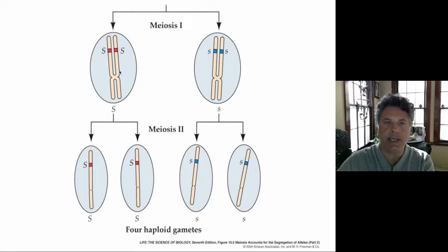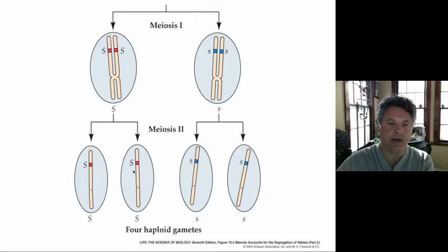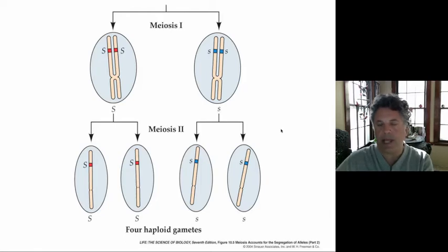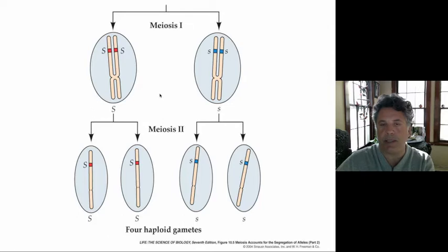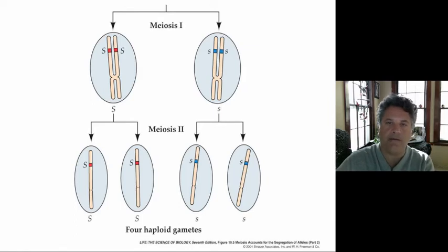In meiosis II, the chromatids separate in a mitotic-like way, so that each cell produces two daughter cells — each with a single chromosome bearing the little s allele, and the other two with a single chromosome bearing the big S allele. We have four haploid gametes: two bearing big S and two bearing little s. This matches up very well with Mendel's first law — that at the time of reproductive cell formation, the Mendelian alleles segregate independently of each other, as single copies into gametic products. The behavior of chromosomes thus provides a mechanical basis for the segregation of Mendelian alleles according to Mendel's first law.